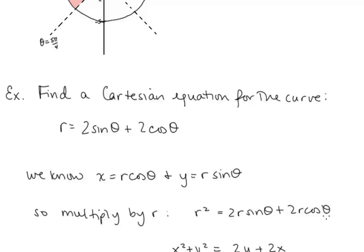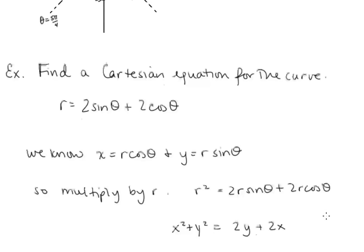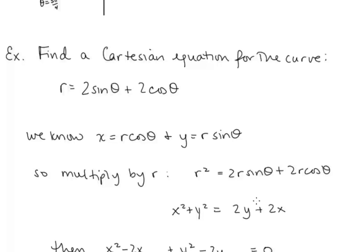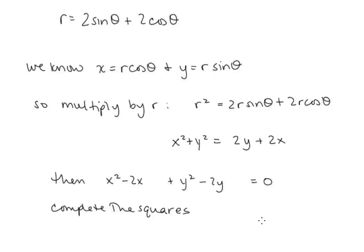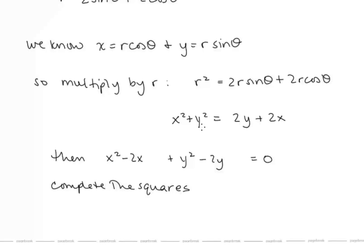Now we know that 2r sine theta is 2y, 2r cosine theta is 2x, and r squared is x squared plus y squared. So now we have this equation completely in terms of x and y. But we don't normally see equations in this form, so we need to complete the square and identify this curve.